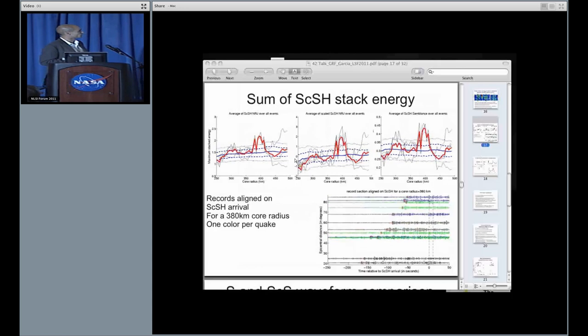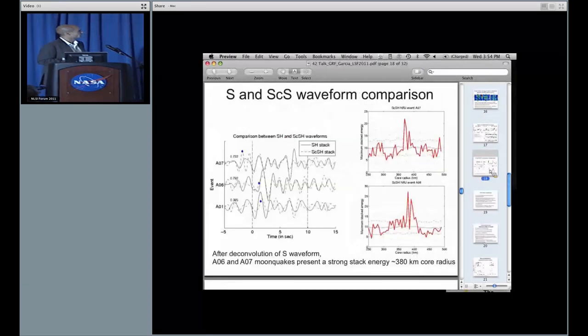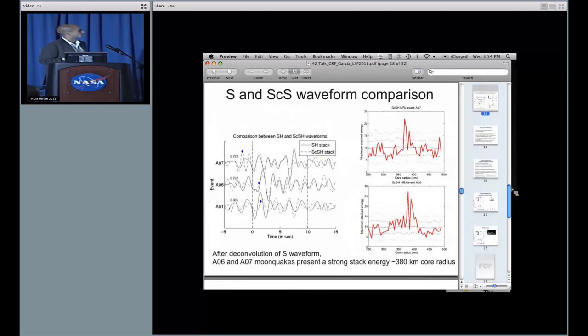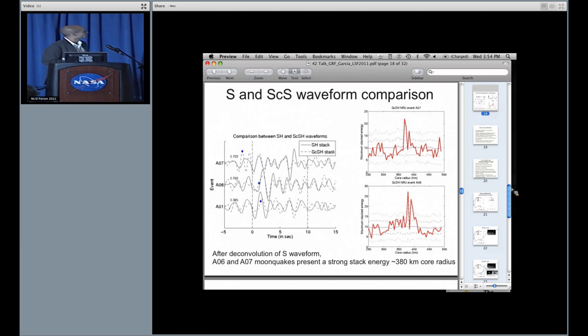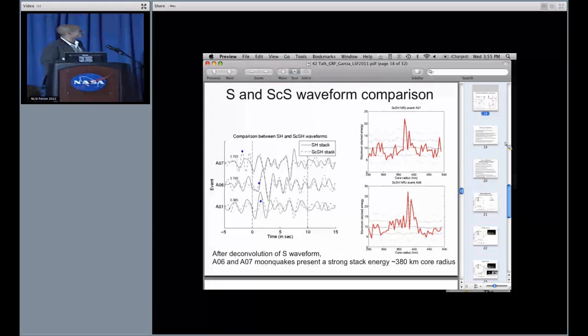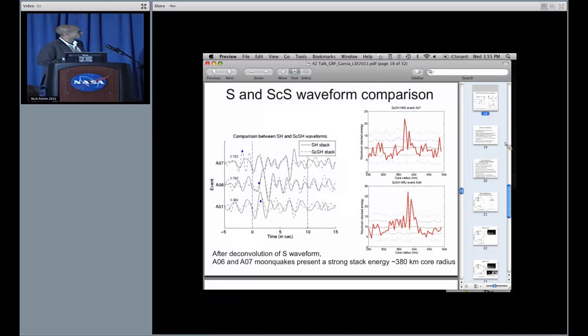What you can do also to confirm this detection is that you know that the direct phase and the core reflected phase should have the same waveforms. We compared here the stacks of core reflected and direct phase. It's working quite well with a correlation coefficient larger than 0.7 for events A06 and A07, but not so much for event A01. We confirm this by deconvolving the waveforms from the direct phase. For the two events, A06 and A07, we still have a peak here at three standard deviation level around 380 kilometer core radius.